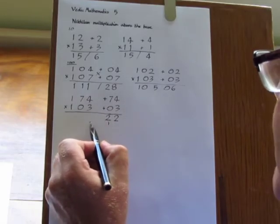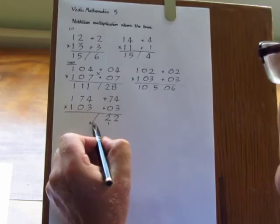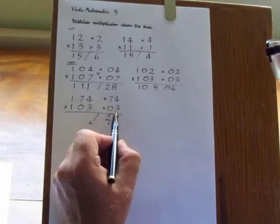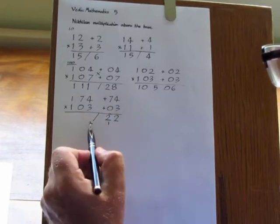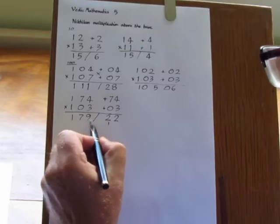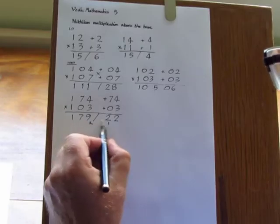And the 20 has to be carried over to the left hand part of the answer. So when we cross add 174 and 3, then we add in the carry 2 as well, giving 179. And the answer is 17922.